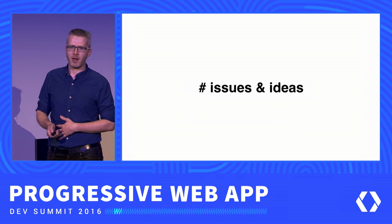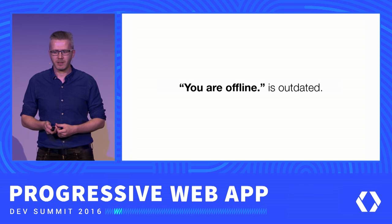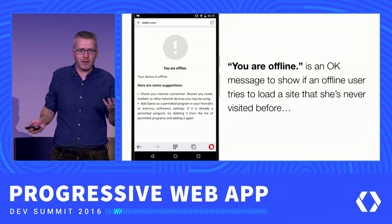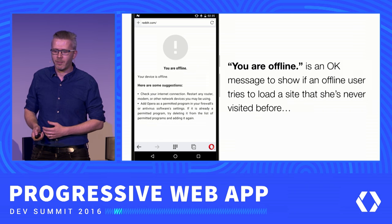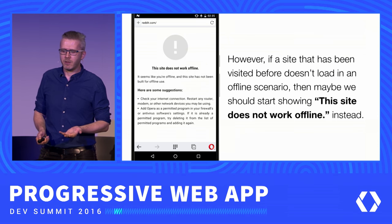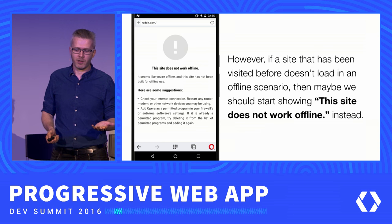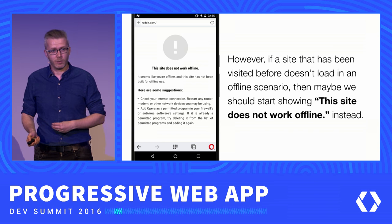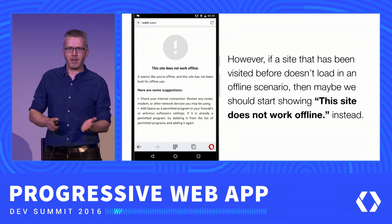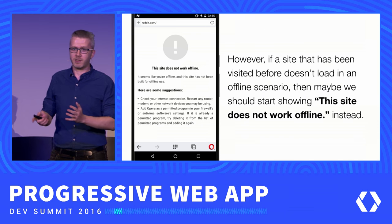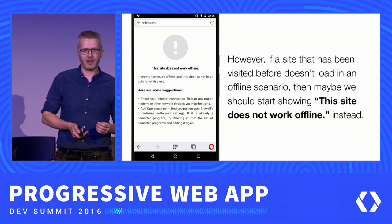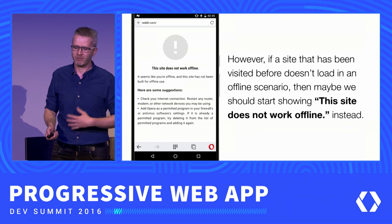Some issues and ideas: telling users 'you are offline' is a bit outdated. If you visited a site before and try to reach it again while offline, maybe what we should say is: 'this site doesn't work offline — it seems like you're offline, but this site hasn't been built for offline use.' So we blame the site instead of the user. It's time to think about how we as a browser vendor can nudge site owners to provide an offline experience — using service workers and so on — which should be part of the package.